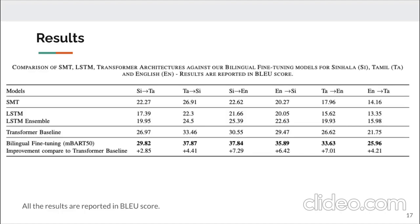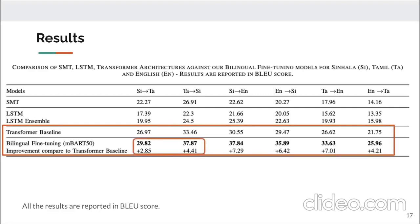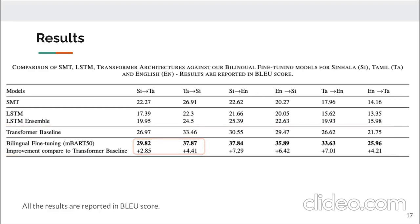All results are reported in BLEU score. We observe significant performance gains for bilingual fine-tuning on all six cases. Most importantly, on non-English-centric pairs such as Sinhala-Tamil and Tamil-Sinhala, we obtain significant improvements, demonstrating the usefulness of pre-trained models for low-resource NMT. We observe that when English is on the target side, results are always higher than when English is on the source side, likely because English benefits from large-scale monolingual data during pre-training — 55 million tokens.